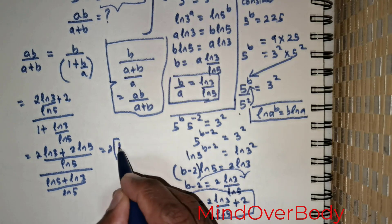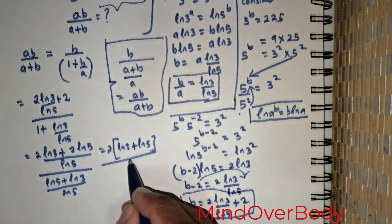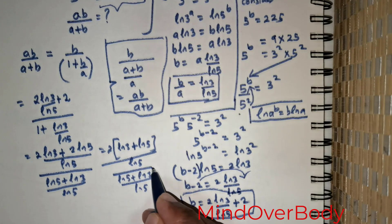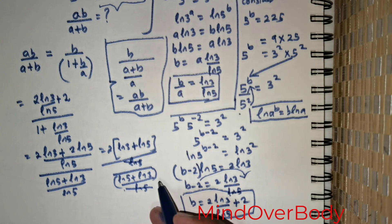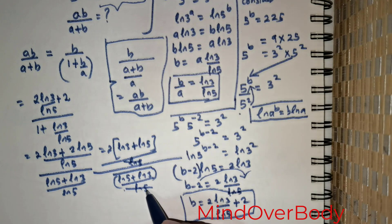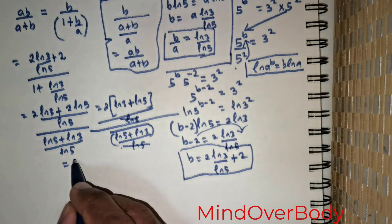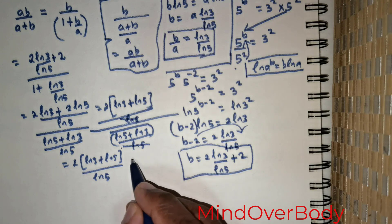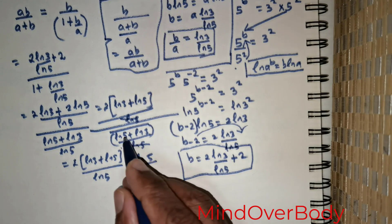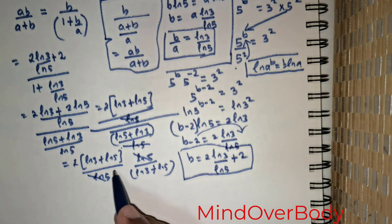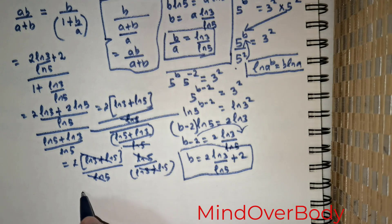This can be rewritten as 2·ln3 plus ln5 divided by ln5, all over ln5 plus ln3 divided by ln5. The ln5 terms in numerator and denominator cancel. Upon flipping, this becomes ln5 over ln3 plus ln5, allowing us to cancel the (ln3 + ln5) terms, giving the result 2.